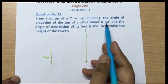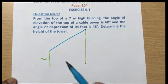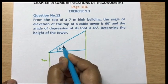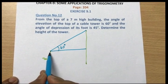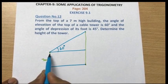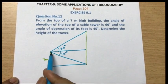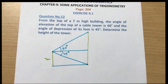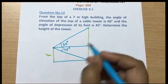The angle of elevation of the top of the cable tower from the top of the building is 60 degrees. The angle of depression of its foot is 45 degrees — this is the foot, and I am drawing the ground here. This angle is 45 degrees (angle of depression from eye level) and this is the angle of elevation. We have to find the height of the tower.